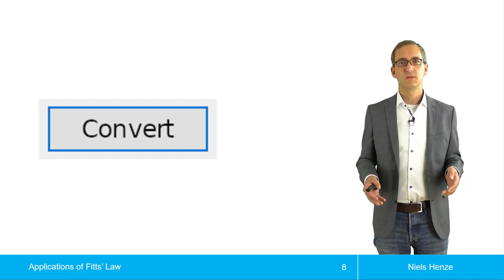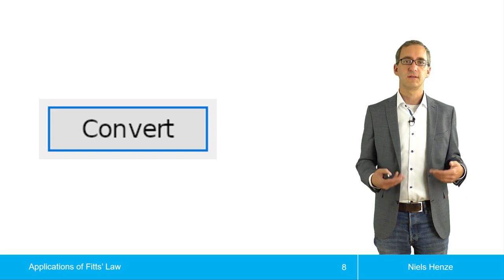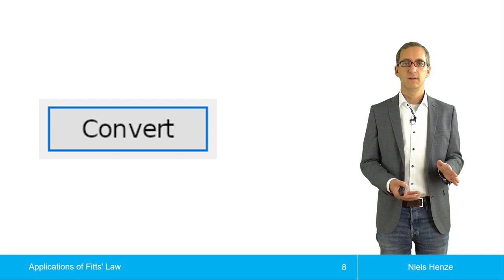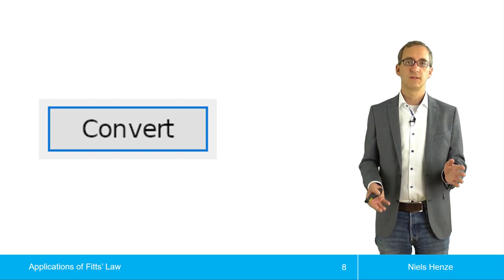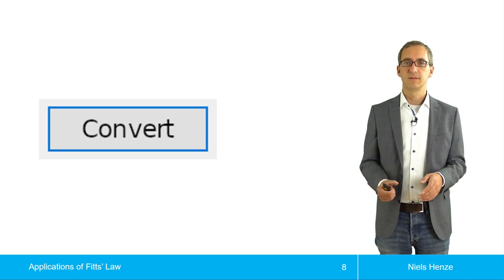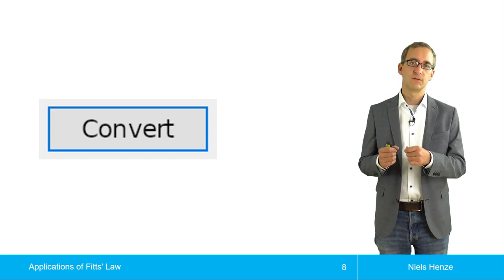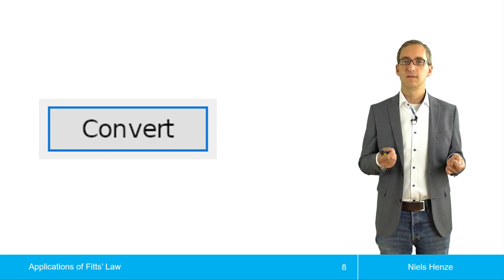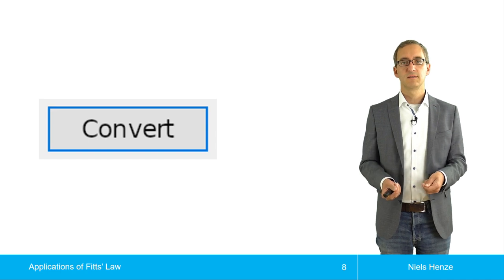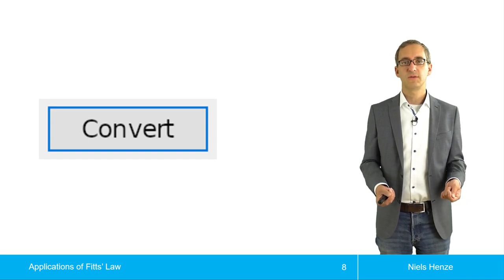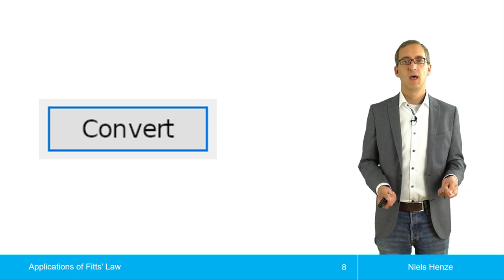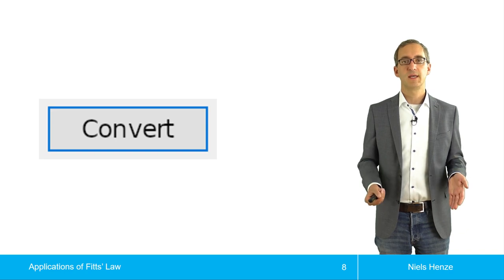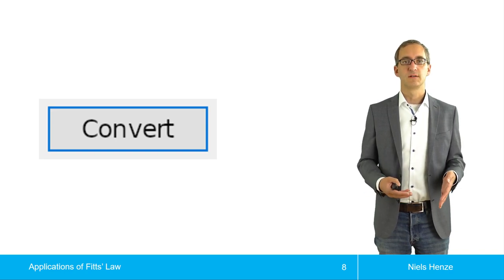But there are applications where it actually makes sense to change button size. An example is calculators — both physical and digital calculators change the size of different keys. For instance, the equal sign is often larger than the other buttons because it is used so much more often, and making it larger can be motivated by Fitts' law. This is one way to enable users to select targets more quickly.